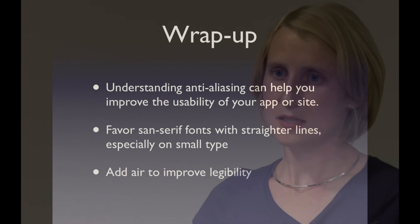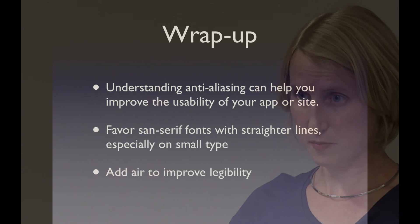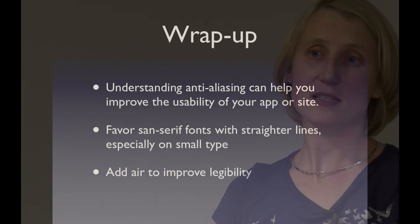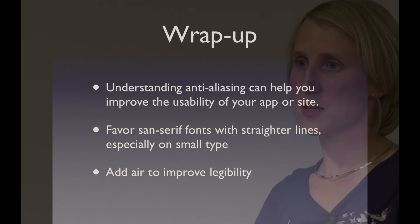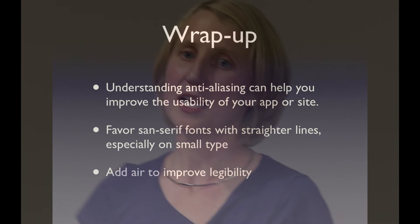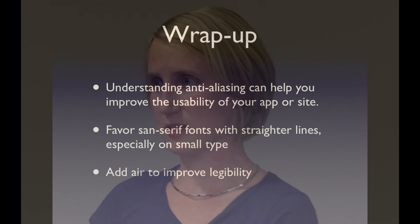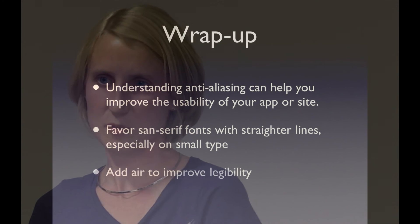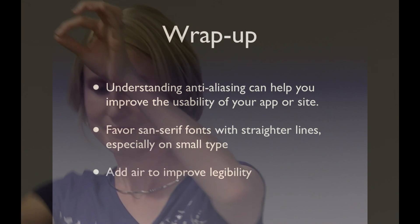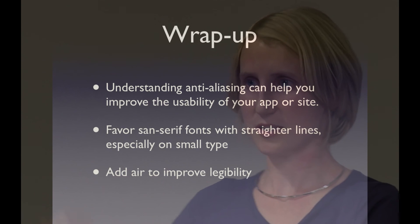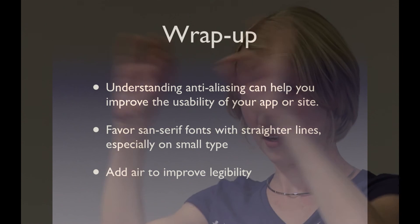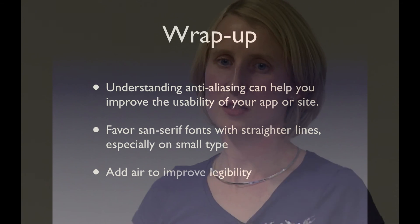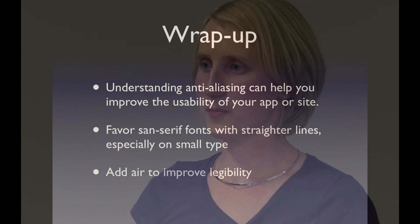Just to wrap up: understanding anti-aliasing can help you improve what fonts you pick and how legible they are. Favor sans-serif fonts with straighter lines, especially for small type. That's not to say never use serif fonts — some websites use them effectively — but sans-serif is the safer bet if you're not sure. If you don't know what serifs are, Georgia is a serif font — it has the little things on the letters. Fonts without those are sans-serif. And use air to make sure your letters aren't bleeding into each other.